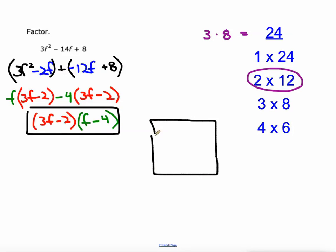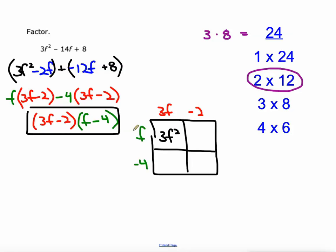We'll check this by doing a rectangle diagram. We'll put 3f minus 2 up here and f minus 4 along the side. f times 3f is 3f squared, f times negative 2 is negative 2f, negative 4 times 3f is negative 12f, and negative 4 times negative 2 is positive 8. So that's 3f squared minus 14f plus 8.